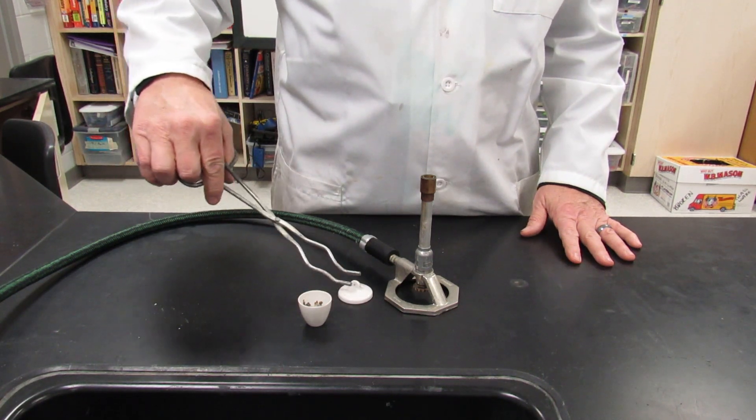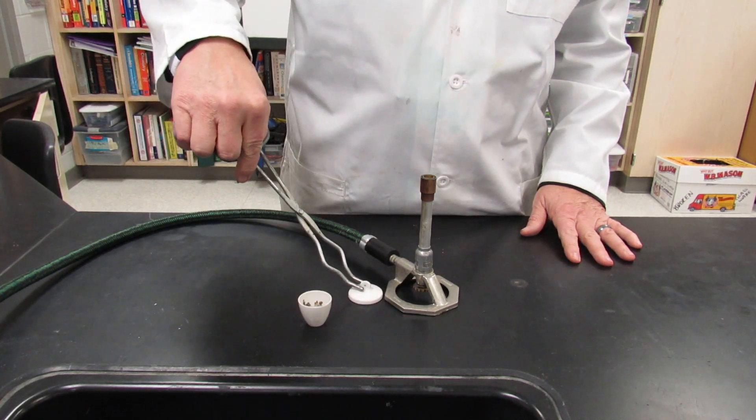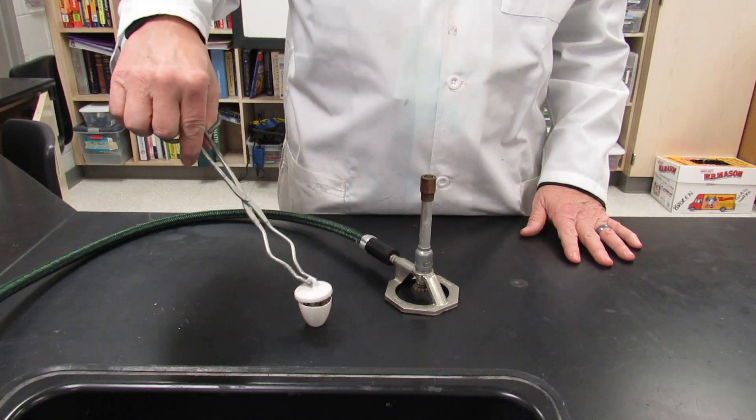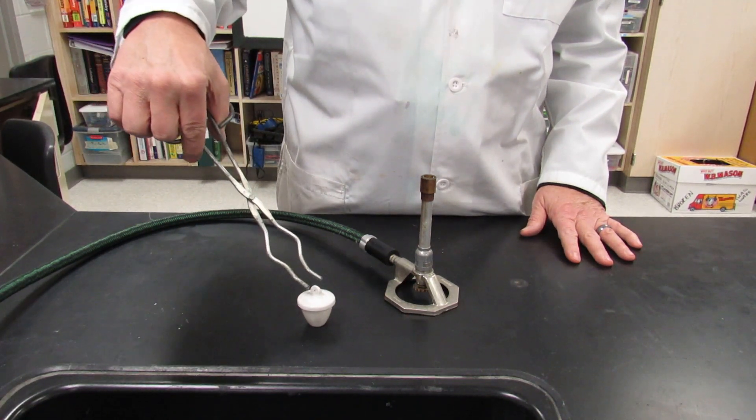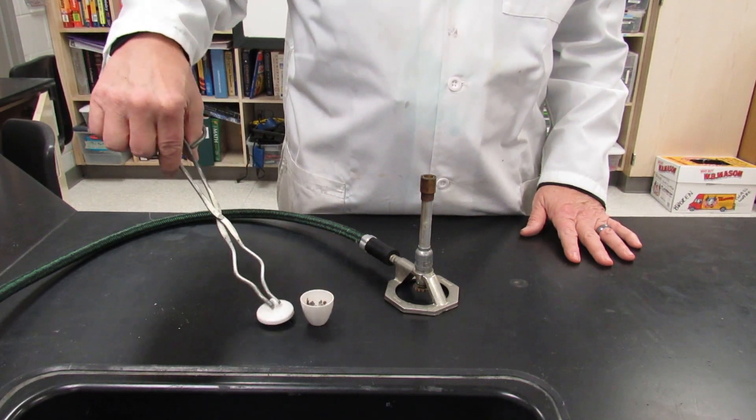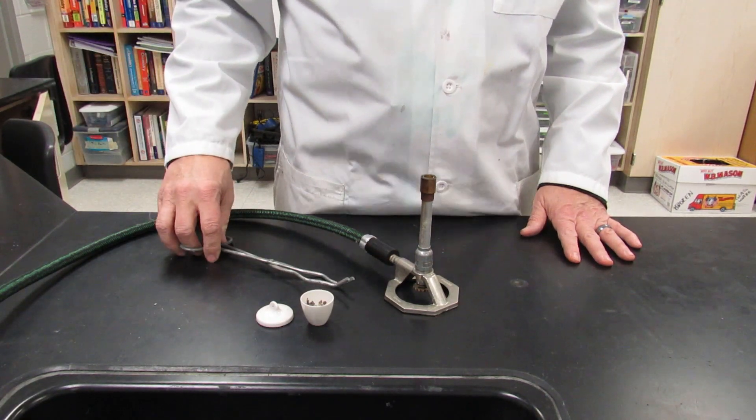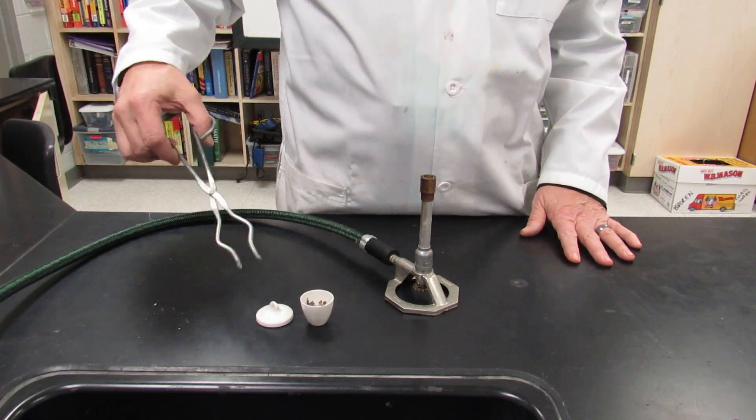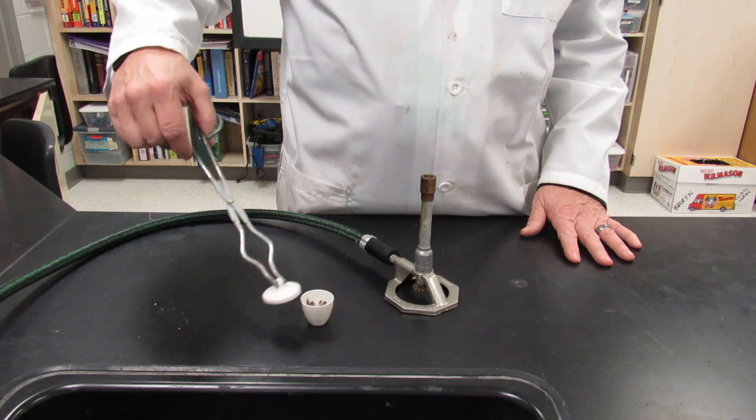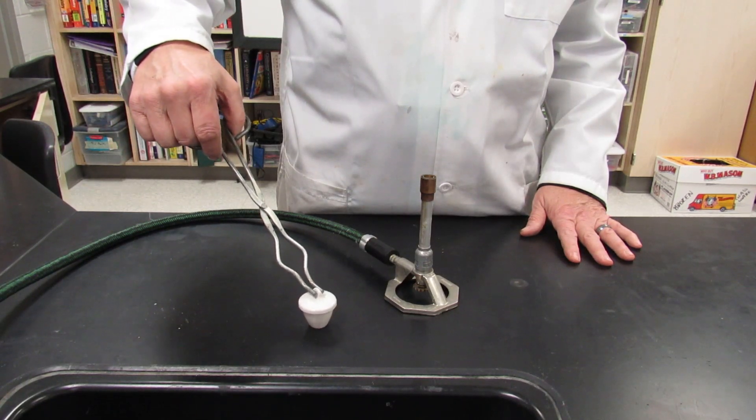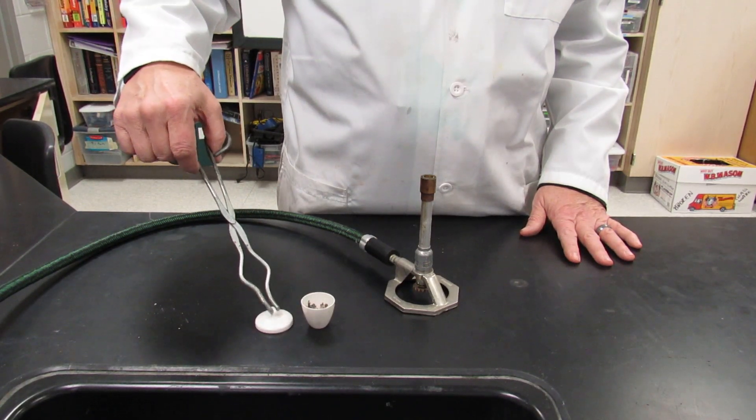You also need to be able to pick up the lid. If you can't pick it up with the curve in that orientation, you can always flip over the crucible tongs. But you need to be able to take the lid off, put it on, take it off, put it on.